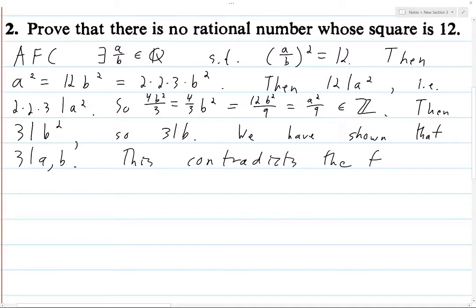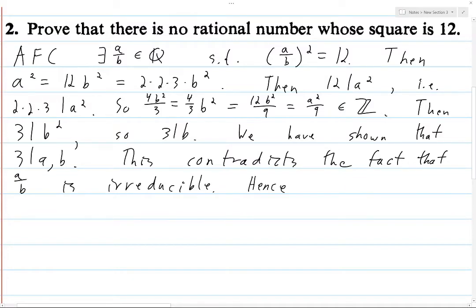But this contradicts the fact that the fraction A over B was chosen to be irreducible. Hence no such A over B exists — i.e., there is no rational number such that you square it and get 12.